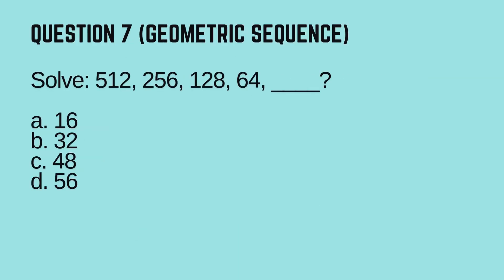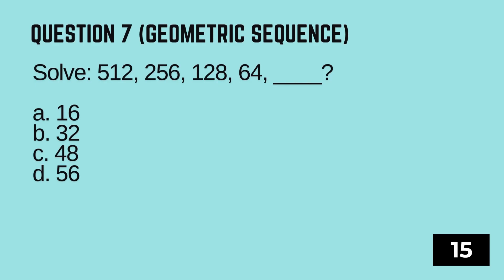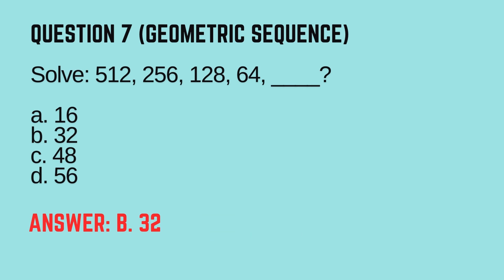Question 7. Geometric Sequence. Solve the sequence: 512, 256, 128, 64, blank. Options: A-16, B-32, C-48, D-56. Timer starts now. The correct answer is B — 32.